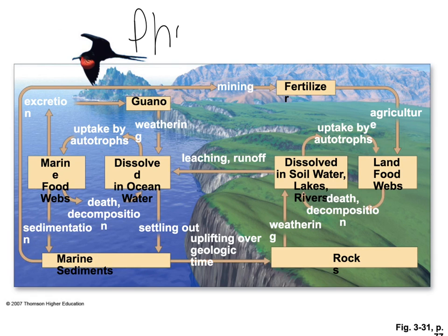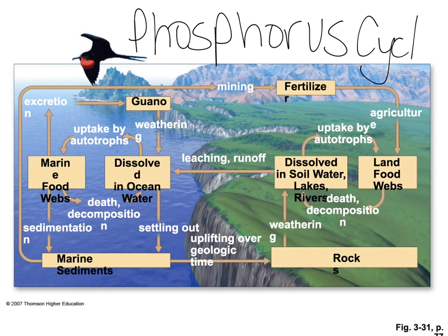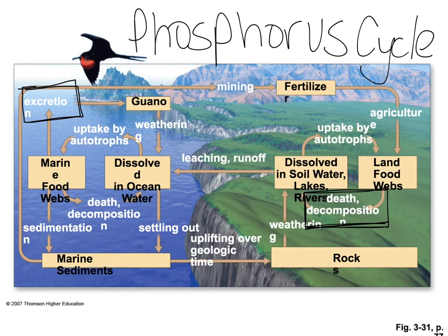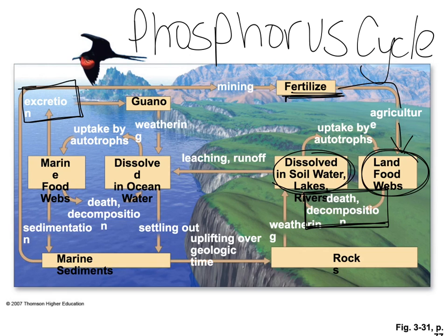The next cycle is the phosphorus cycle. Phosphorus is a nutrient necessary for living things in very small amounts, but it cycles slowly. Phosphorus is added into the land through fertilizer and agriculture. It gets added into food webs, dissolved in soils, and runs off into oceans and water. When organisms die and decompose, phosphorus is released back into the soil or water. You should be able to read and follow the arrows in the diagram to answer questions about phosphorus.